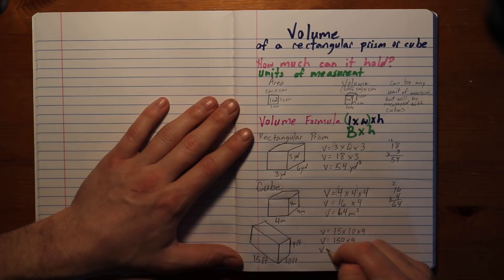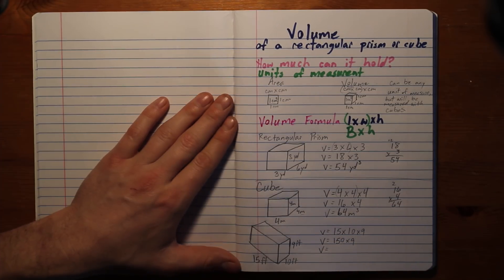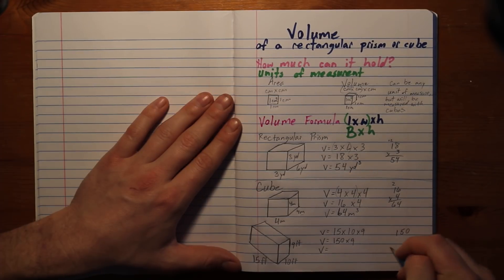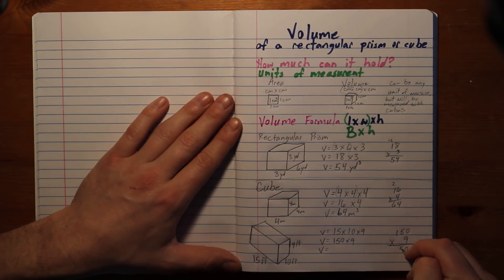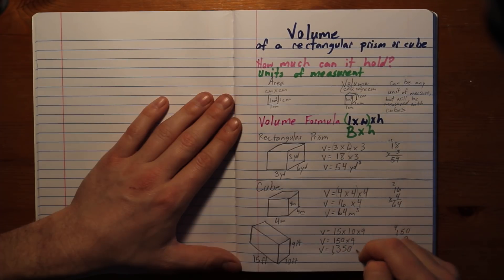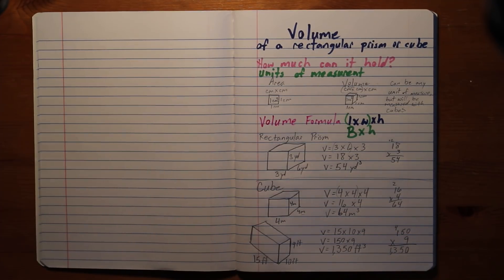Why don't you go ahead and pause, figure this out by yourself, and see if you can get it. So let's go ahead. You should have had 150 times 9. 9 times 0 is 0. 9 times 5 is 45. 9 times 1 is 9 plus 4 is 13. So we have 1350 cubic feet. Don't forget that unit of measure. So that is how we find volume.